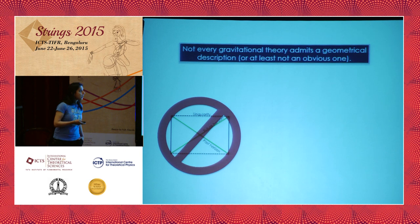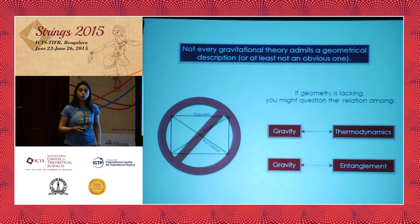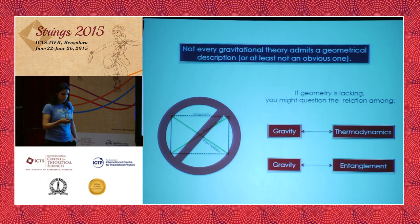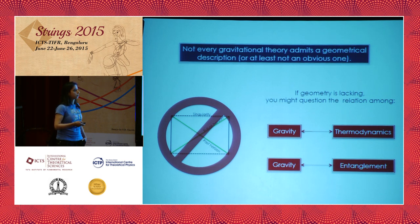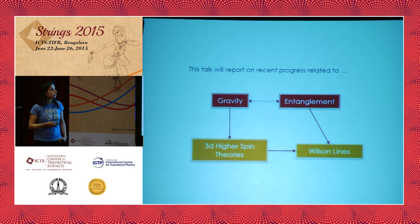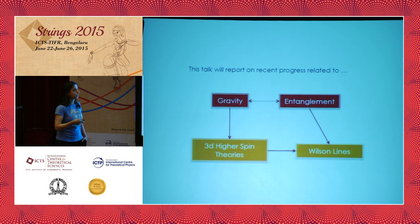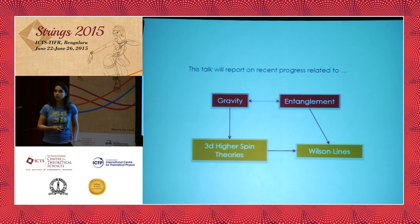In scenarios where you lack a geometric description, you might question two very robust and universal features of gravity. This has already been discussed throughout the conference — the close and intimate relationship between gravity and thermodynamics, and the intimate relationship between gravity and entanglement entropy, as was reviewed this morning by Rob. In this talk, I want to tell you about recent progress in understanding the relationship between gravity and entanglement in the context of gravitational theories that don't have a metric-like interpretation. The main object we're going to use is Wilson line operators.